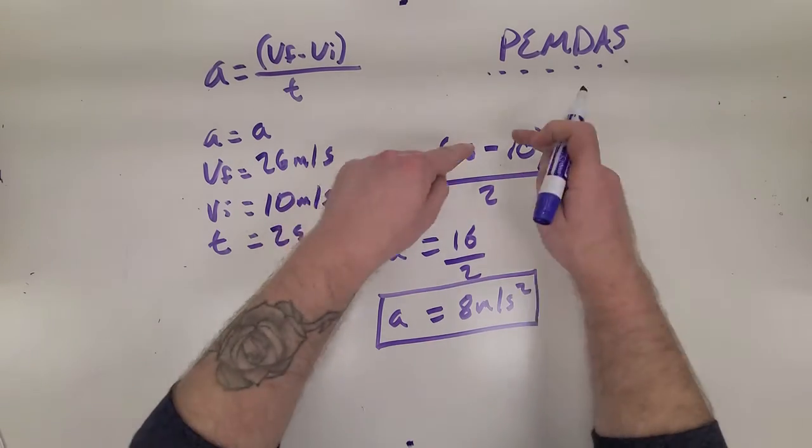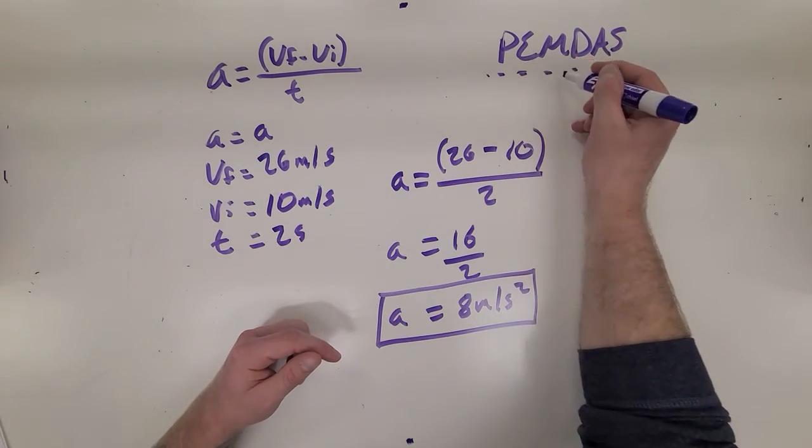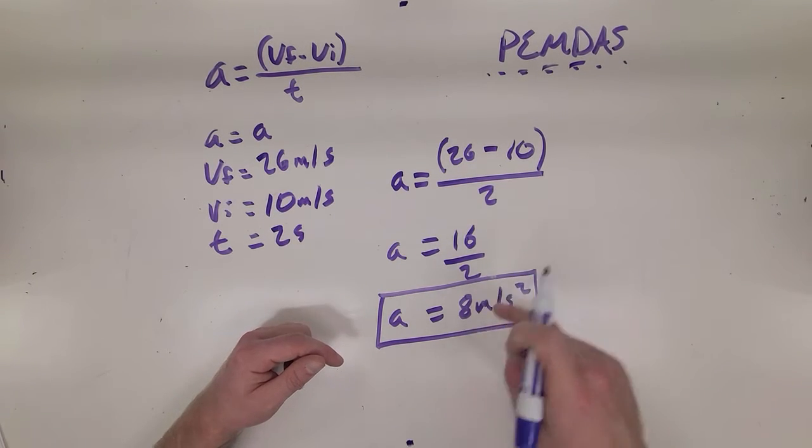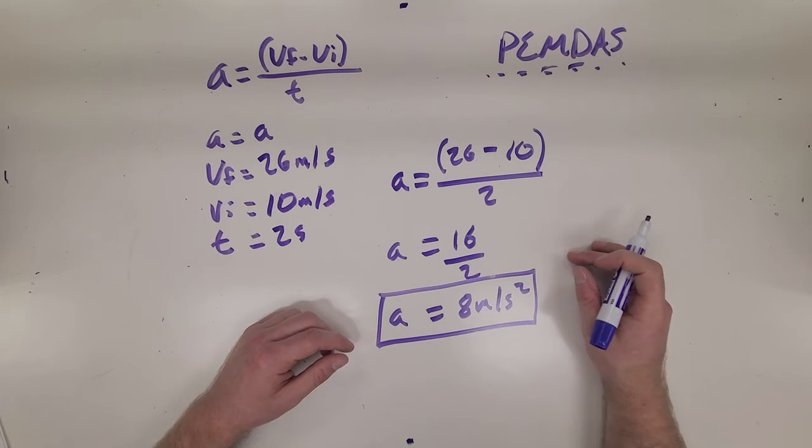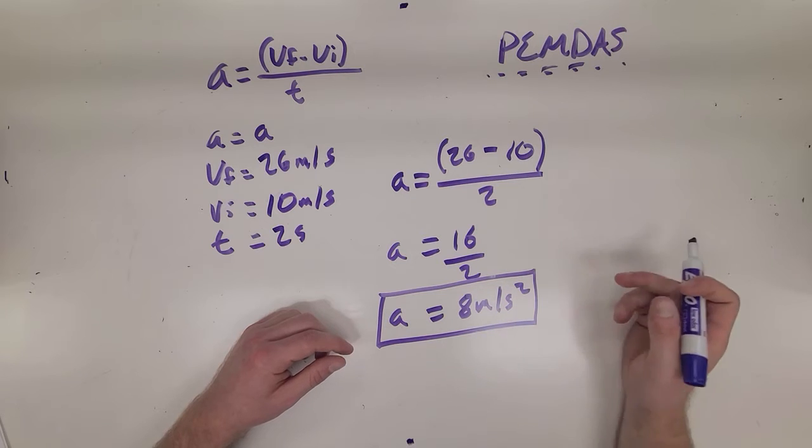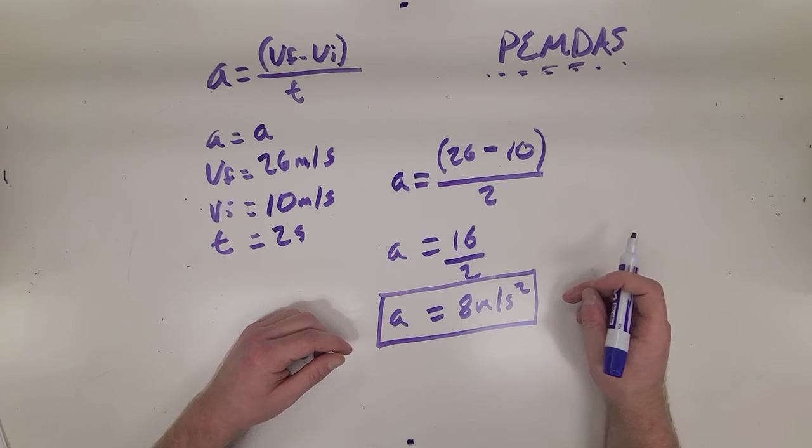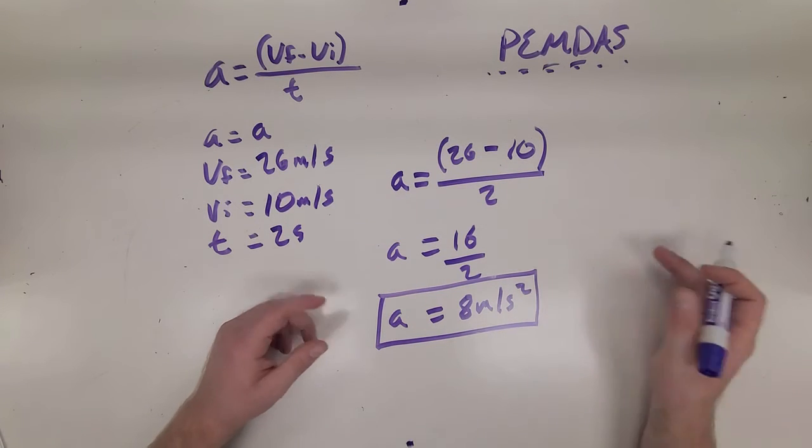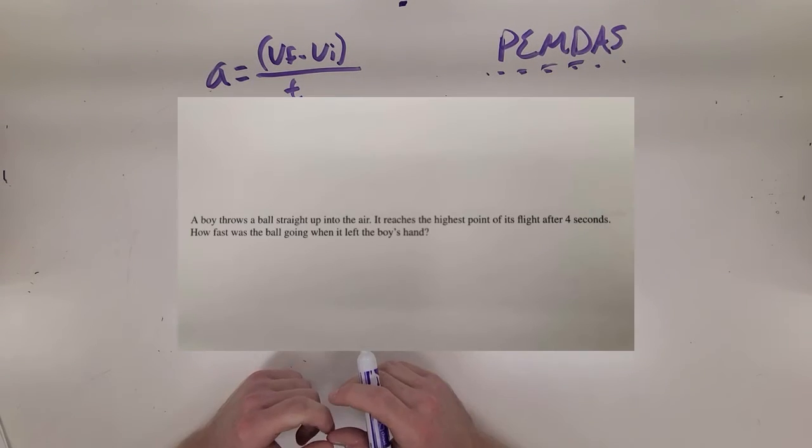Step 1, do what's in parentheses. Step 2, there's no exponents. There's no multiplication going on. We do have some division though, so we'll go 16 divided by 2. That gets us our 8 meters per second squared. Meters per second squared is just the units for acceleration because it's changing in meters per second per second. Let's go ahead and look at another problem.